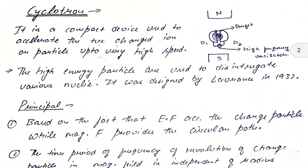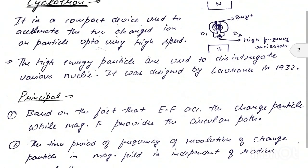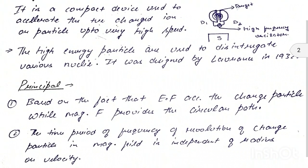The main principle of cyclotron: first, it is based on the fact that electric field accelerates the charge particle and magnetic field provides the circular motion. Second, the time period or frequency of revolution of a charge particle in a magnetic field is independent of radius or velocity.